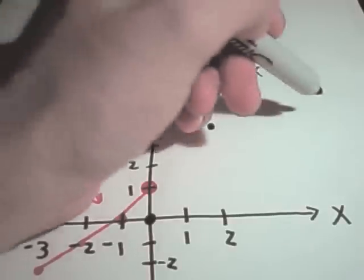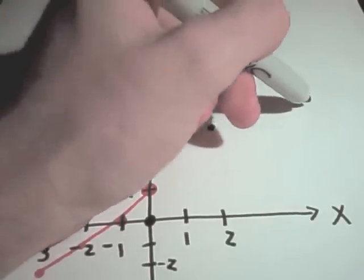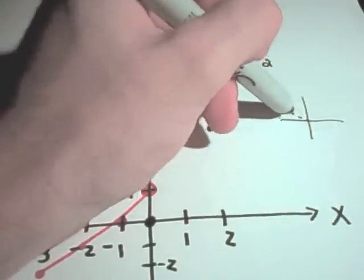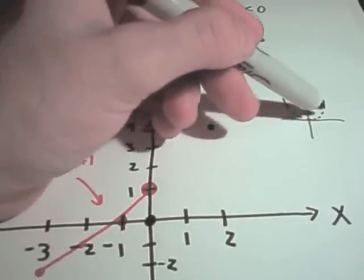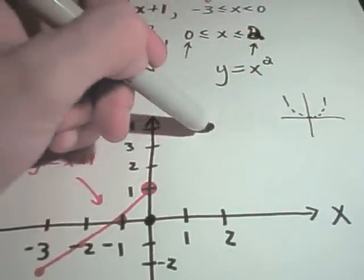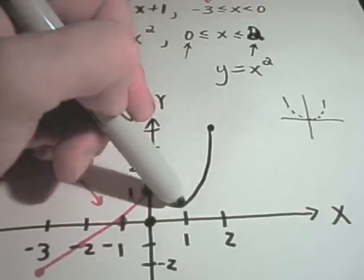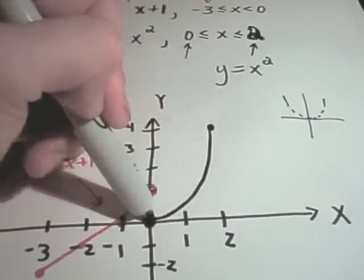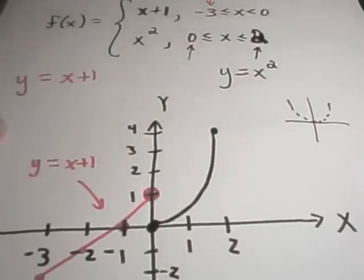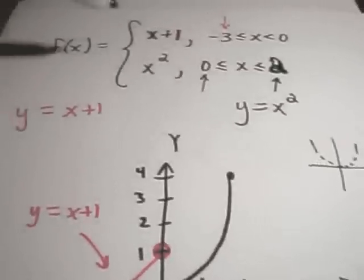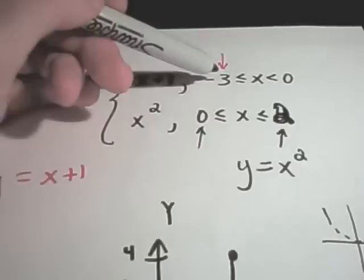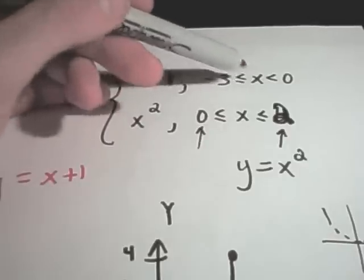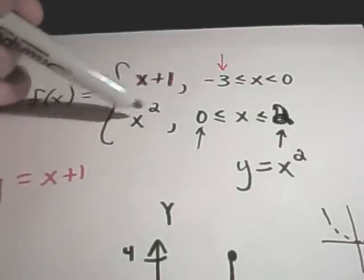Then connect the dots, remembering that y equals x squared looks like a parabola. In this case we're only getting the right half of the parabola, from 0 to 2. This completes the graph of the piecewise function: x plus 1 on the interval negative 3 to 0, and x squared on the interval 0 to 2.